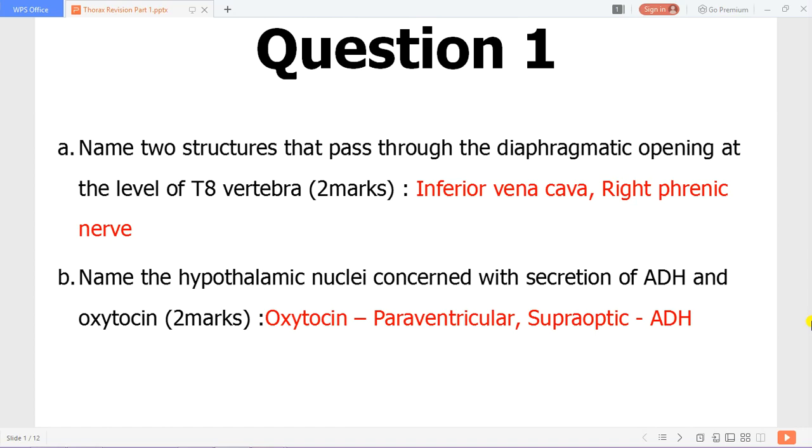Name hypothalamic nuclei concerned with the secretion of ADH and oxytocin. Oxytocin is produced via the paraventricular nuclei and the supraoptic nucleus produces ADH which are stored in the posterior pituitary for release.